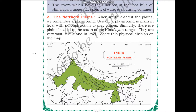Let us start the second physical feature of India: the northern plains. In the previous video we learned about the Himalayas. In this video we will learn in detail about the northern plains. When we talk about plains, we remember a playground - usually a playground is plain and level with no obstruction to play games. Grounds are very flat and do not have any obstructions in between.